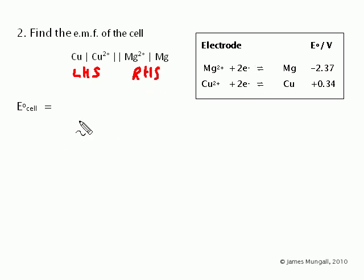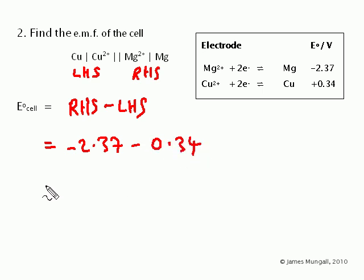We're given the standard electrode potentials for those two things. I can write the formula, so E cell is right hand side subtract left hand side. The right hand side is magnesium which is minus 2.37, and the left hand side is 0.34, so minus 0.34. That gives an answer of minus 2.71 volts.